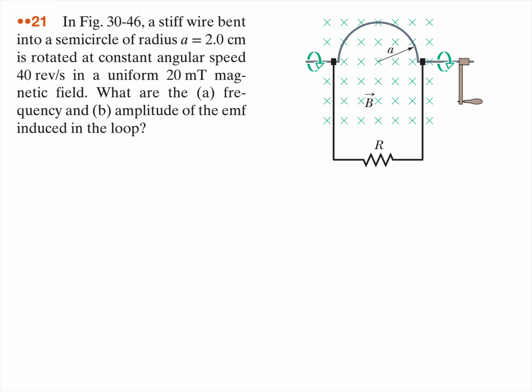In number 21, we have a stiff wire bent into a semicircle of radius 2 centimeters that's rotated at a constant angular speed of 40 revolutions per second in a uniform 20 millitesla magnetic field. What are the frequency and amplitude of the EMF induced in the loop?